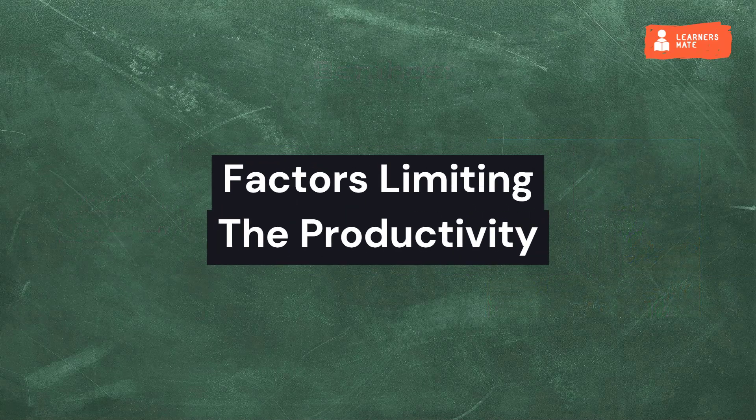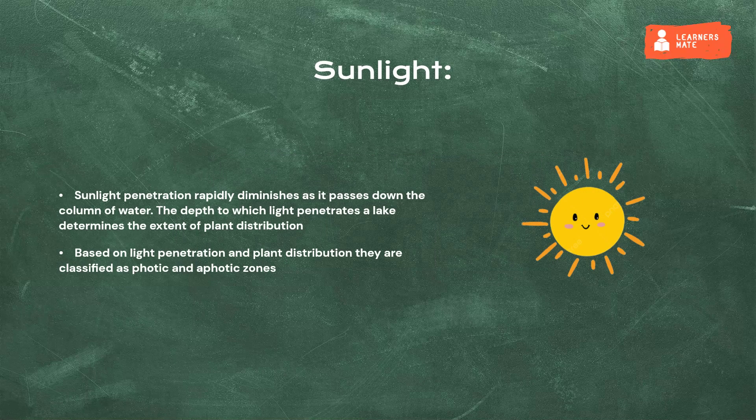The factors limiting the productivity. Sunlight: sunlight penetration rapidly diminishes as it passes down the column of water. The depth to which light penetrates a lake determines the extent of plant distribution.